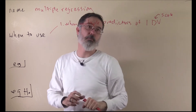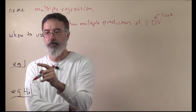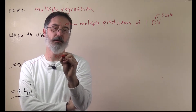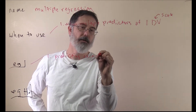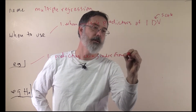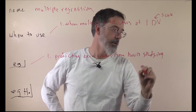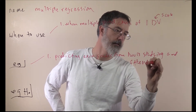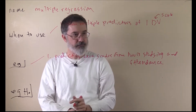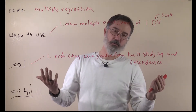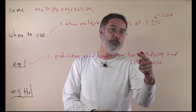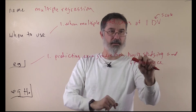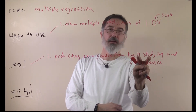The predictors don't need to be scale, though. They can be grouping variables or anything like that. An example would be predicting exam grades from hours studying, like we did for simple regression, but now we could also include attendance — how many days you attended lecture. Now we have two variables predicting exam grades. We will probably do a better job predicting because we have more information, since you learn stuff in lecture as well as at home studying.